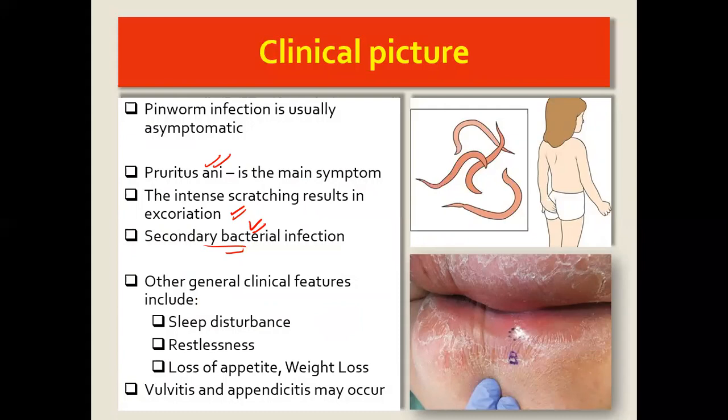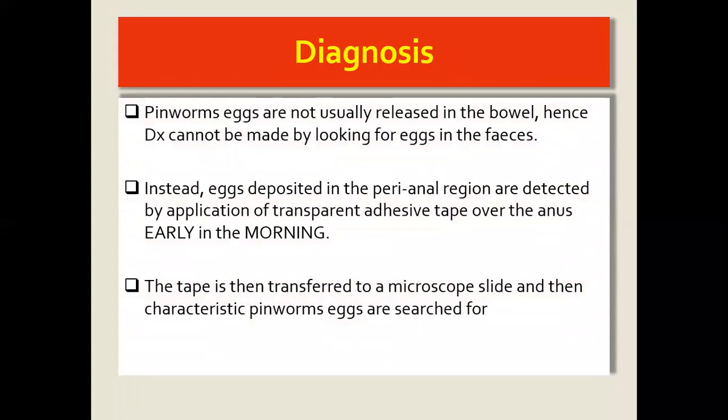The worms do not only go to the perianal region — they can also migrate to the vaginal folds, and you might have vulvitis occurring as well.